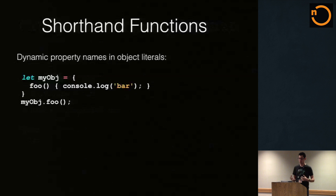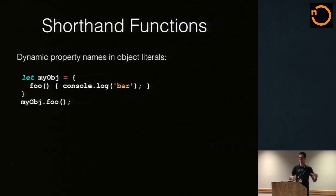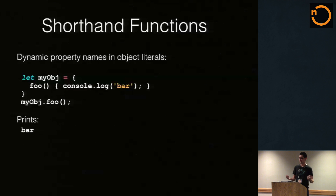Another object literal modification is we now have a shorter way of specifying functions inside of an object literal. It's very common to add functions inside of objects. Now we can skip doing key-colon-function and all that. Instead, we simply write the name of the function, parentheses with whatever your arguments are, and then the body. So whenever we do something like this, we get bar back. This is great for saving a lot of characters, and it's also a named function, which is kind of nice.